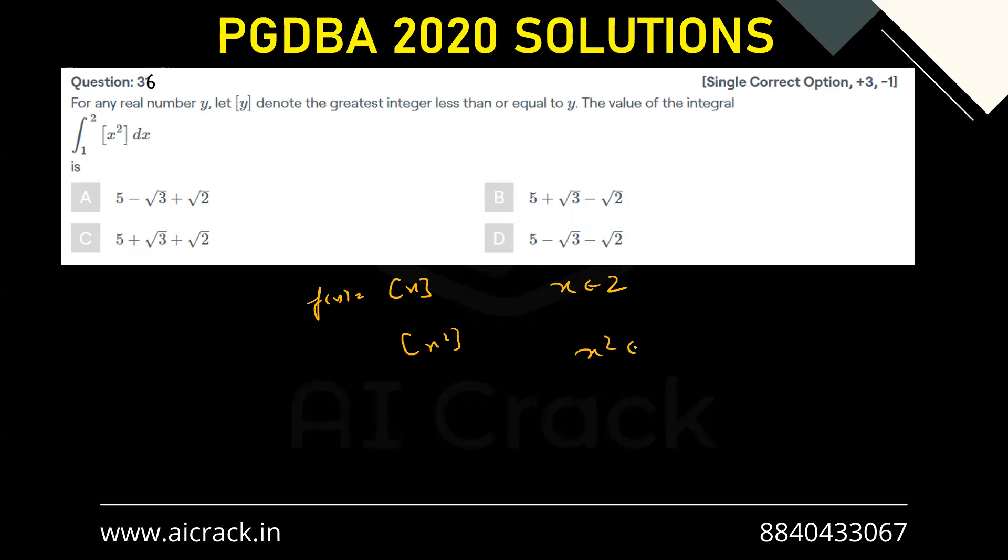So x² would be becoming integers in the range 1 to 2 when x equals √2 and x equals √3. So we have to split the function, split the integral at these points.